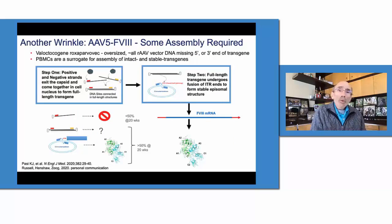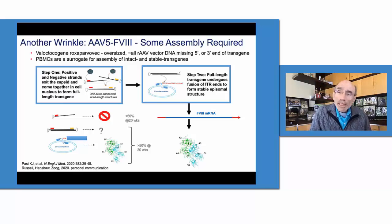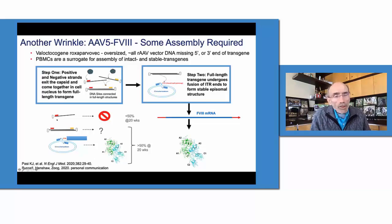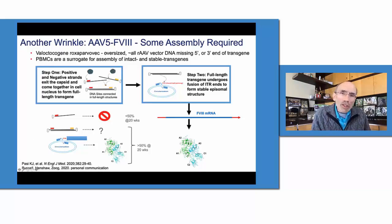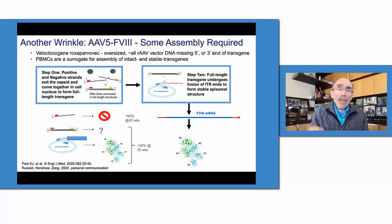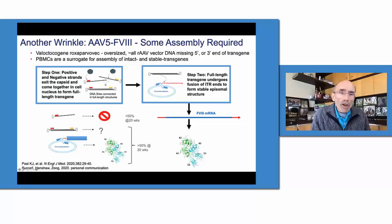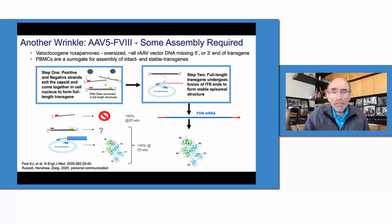For AAV-5 factor VIII, there's another wrinkle to this. It turns out that some assembly is required — maybe a little more than for other transgenes. Scientists at BioMarin have been working on this, reported in the PASI paper from earlier in 2020. This is an oversized transgene; it barely fits into the AAV. What that means is that all of these vector particles are missing either the 5' or the 3' end of the transgene, so an additional step is required to make a full-length transgene.